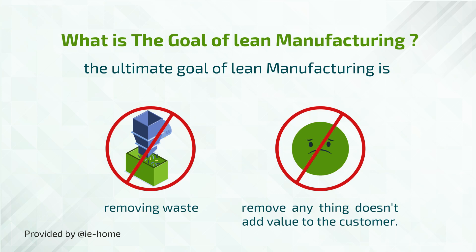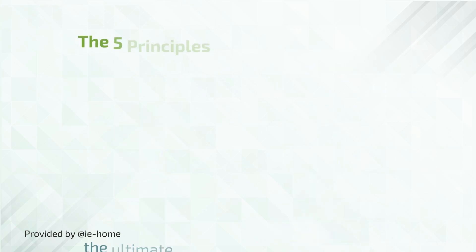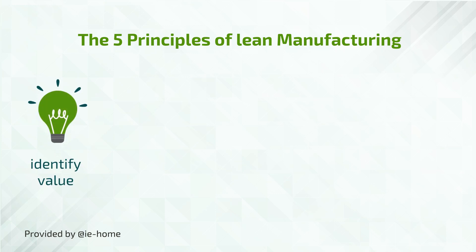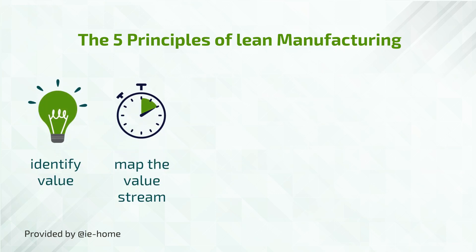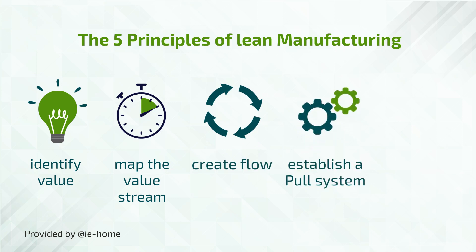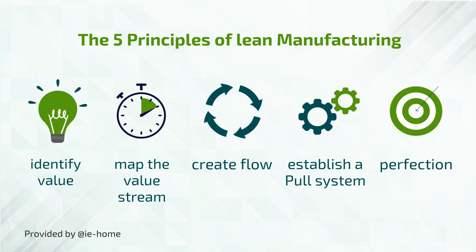Now let's talk about the five principles of lean manufacturing: 1. Identify value. 2. Map the value stream. 3. Create flow. 4. Establish a pull system. 5. Perfection.